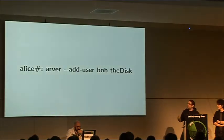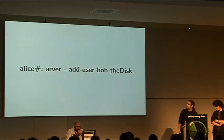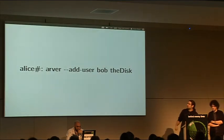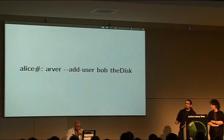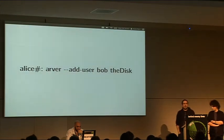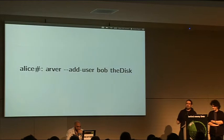If Alice wants to add access for Bob, she types 'arver add user bob' and the disk, and then Arbor will generate a new key.